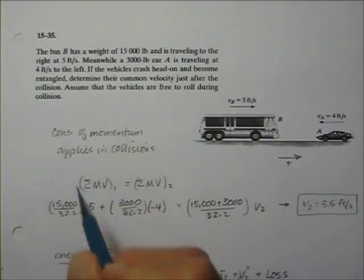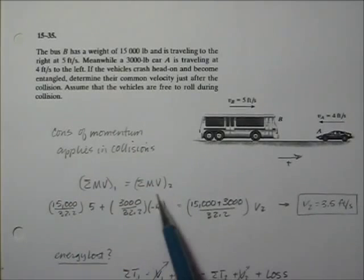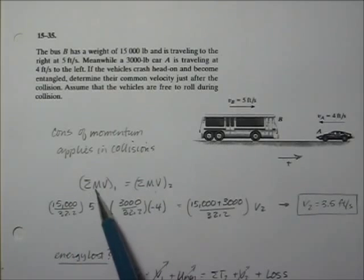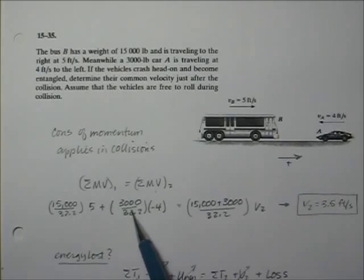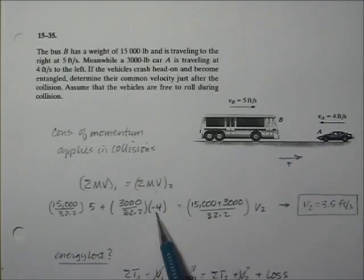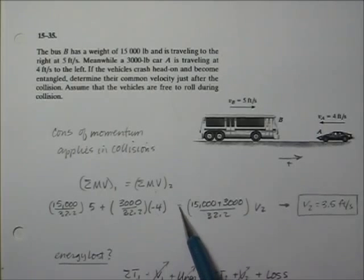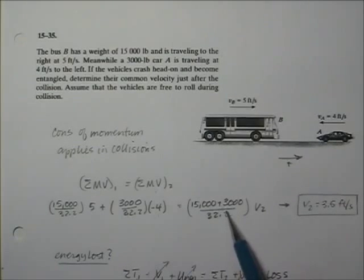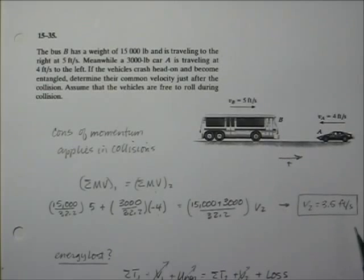Conservation of Momentum applies during collisions, so the sum of the momentums before equals the sum of the momentums afterward. Momentum before is mass times velocity: the mass of the bus times velocity of the bus, plus the mass of the car (3,000 divided by 32.2) times the velocity of the car. The velocity of the car is going in the negative direction, so that is minus 4. After the collision we have the sum of the masses together times the ending velocity, and solving for V we get 3.5.